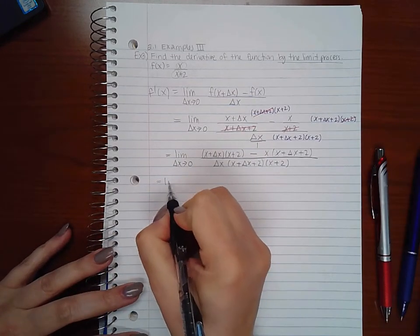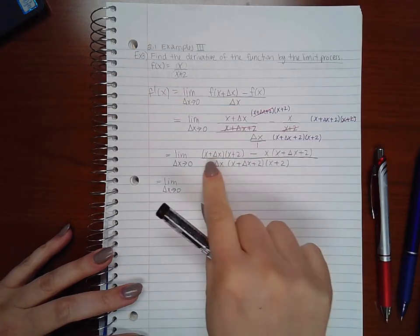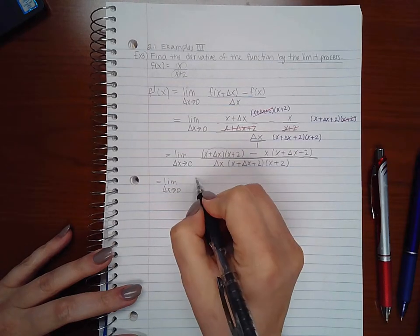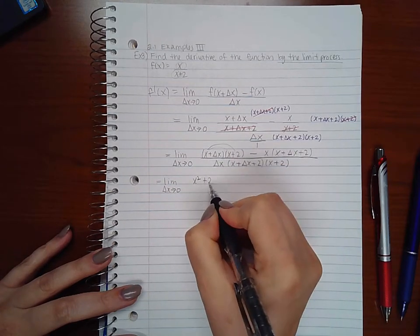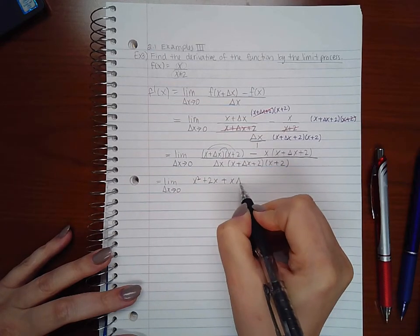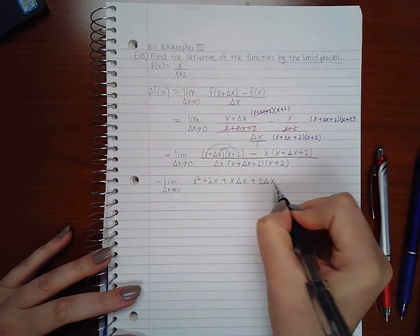So if I simplify this I'm going to FOIL out these or distribute. So x times x is x squared, x times 2 is 2x. Distribute the delta x I get x delta x and then 2 delta x.